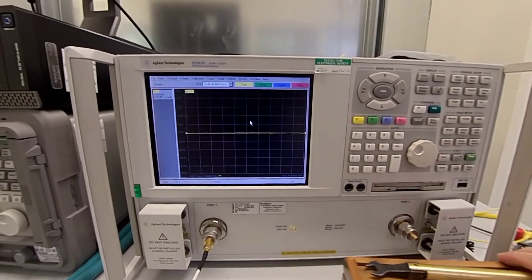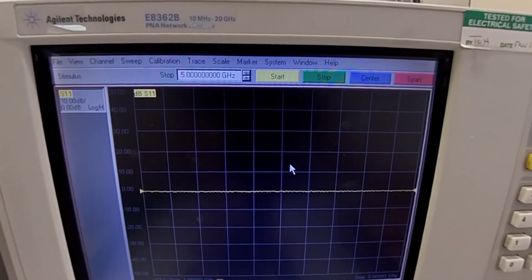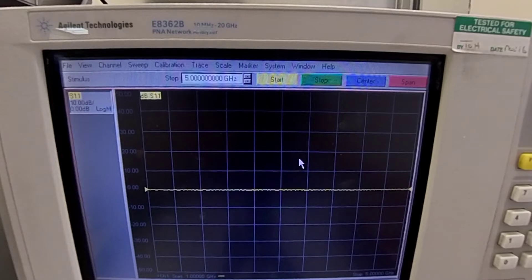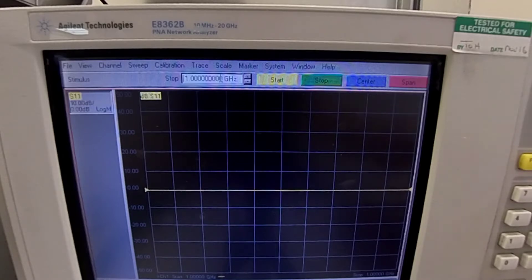Now we will start off with the calibration. The first step of the calibration is to select the desired frequency. In this case we will select 1 GHz as a start frequency. Using the keypad on the right, we will select the stop frequency to 5 GHz.